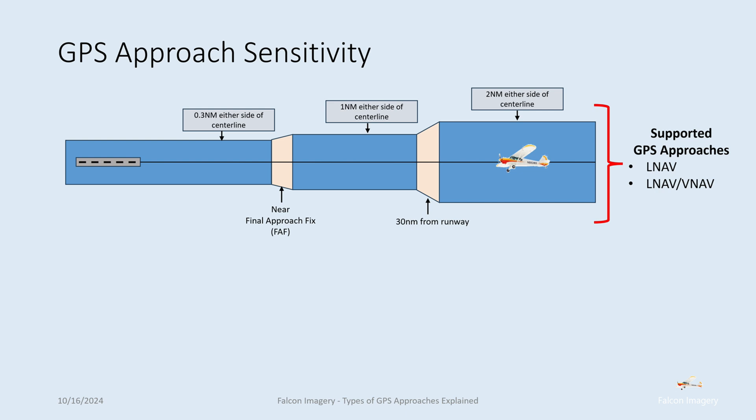Before we go into those individual approaches, let's talk about GPS approach sensitivity. With a localizer — an ILS approach localizer — the sensitivity increases as you get closer to the runway, and GPS has to approximate that. When you're beyond 30 nautical miles out flying the centerline, the width of the sensitivity is two nautical miles either side of the centerline. Within 30 nautical miles, that sensitivity increases to one nautical mile either side. Near the final approach fix, sensitivity increases to 0.3 nautical miles either side of the centerline.